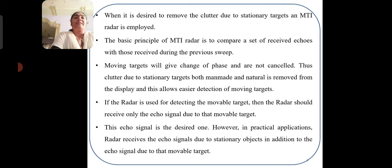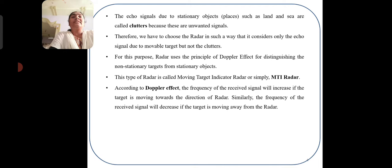If the radar is used for detection of moving targets, it should receive only the echoes due to movable targets. However, in practical applications, the radar also receives echo signals from stationary objects in addition to echoes from movable targets. Echo signals from stationary objects such as land and sea are called clutters. Therefore, we choose the radar in such a way that it considers only the echo signals due to movable targets, using the principle of Doppler effect. This type of radar is called Moving Target Indicator radar, or simply MTI radar.